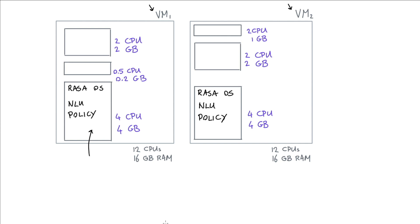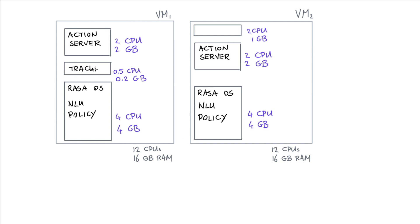In this example I only have two virtual machines with a replication factor of two for the Rasa open source container, but you can imagine a larger Kubernetes cluster with more machines and a larger replication factor. I can do this for the Rasa open source container, my action server, my tracker, and also an NGINX container for routing. These resource pools seem useful, so let's give them an appropriate name — Kubernetes calls these resource pools pods.